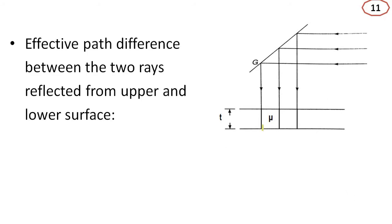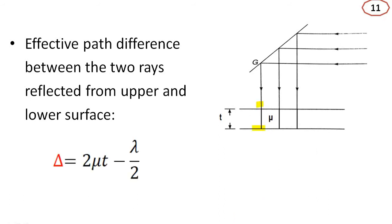In the case of a wave reflected from the lower surface, it has to travel a distance mu t going down and a distance mu t coming back up, giving a total optical path of 2 mu t. So the effective path difference between the two rays reflected from the upper and lower surfaces is delta, equal to 2 mu t minus lambda by 2.